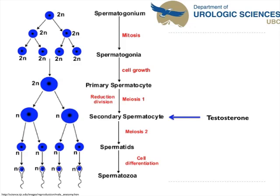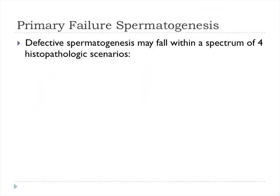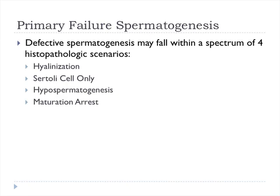Cells external to the blood-testes barrier are directly at risk from gonadotoxins and external environmental factors. Failures with spermatogenesis can be described across a spectrum of four histopathologic scenarios: hyalinization, Sertoli cell only, hypospermatogenesis, and maturation arrest.